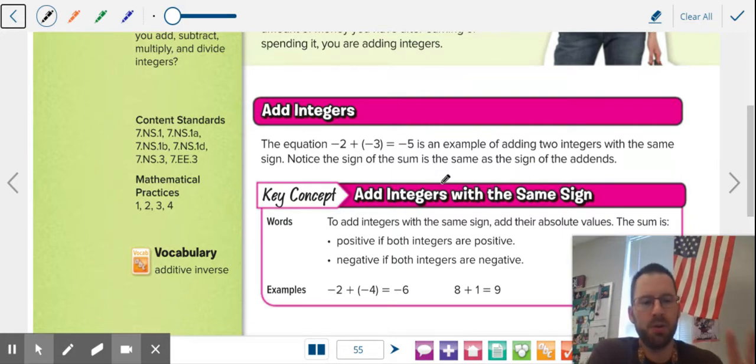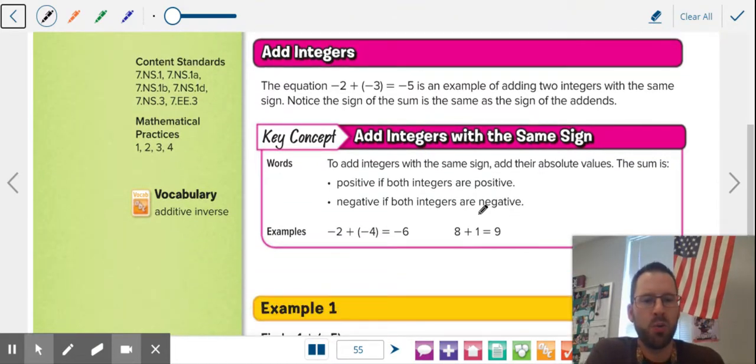So there's two basic rules with adding integers. First rule is if they have the same sign, what you do is add up the integers and keep the sign. You've been doing this kind of adding your whole life, ever since you've been adding regular numbers. Two positives, add them up, keep the same sign.